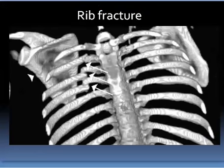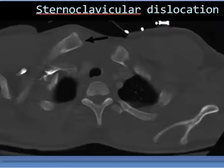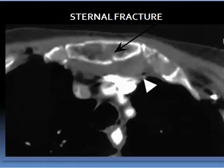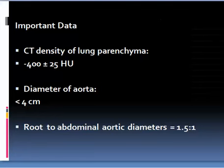This is a 3D reconstruction showing the fractures posteriorly. This is a sternoclavicular dislocation seen in bone window axial. And this is a sternoclavicular fracture seen in bone window axial. The CT density of lung parenchyma is minus 400 plus or minus 25 Hounsfield units.